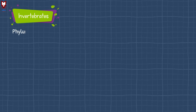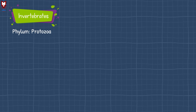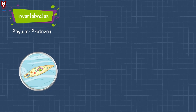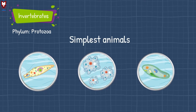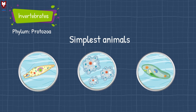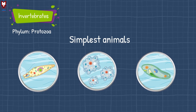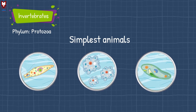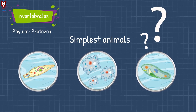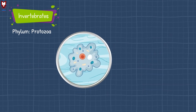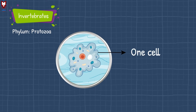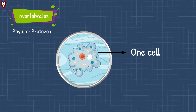The first phylum is Protozoa. This phylum contains the simplest animals. They are the oldest and simplest animals, and each one is made up of a single cell.